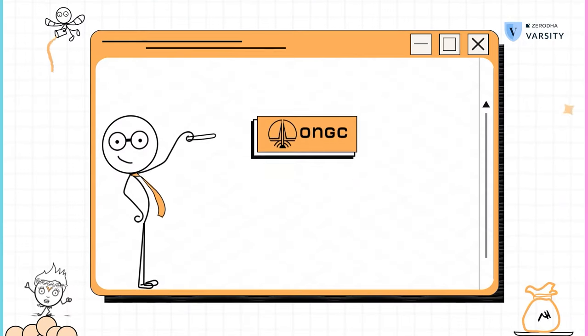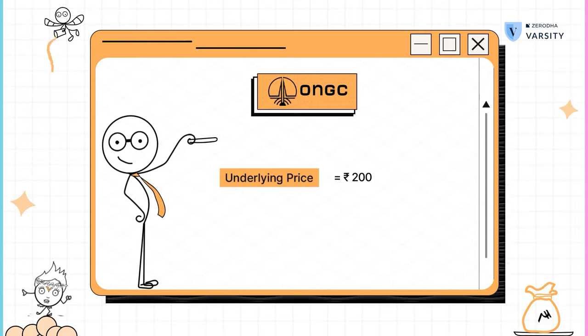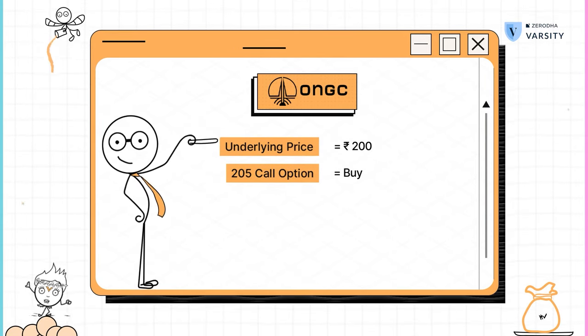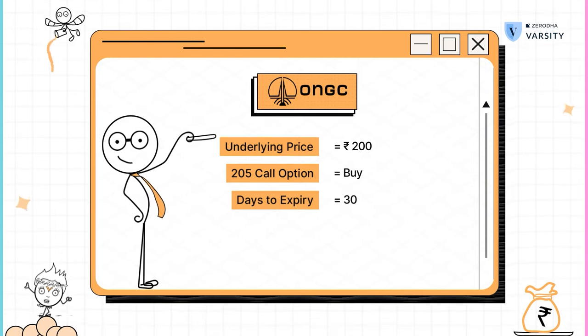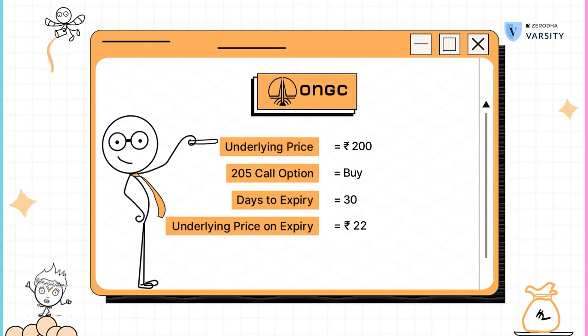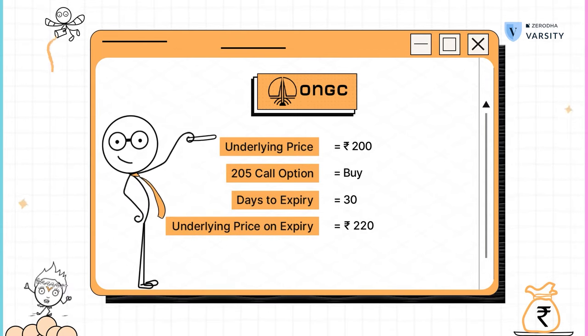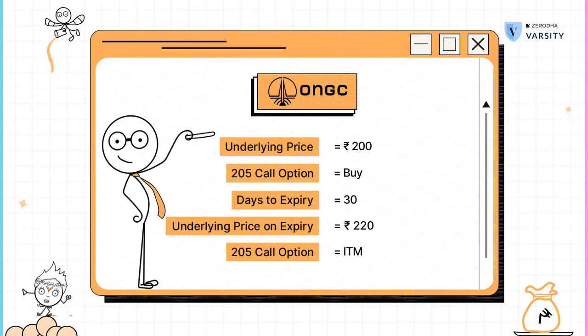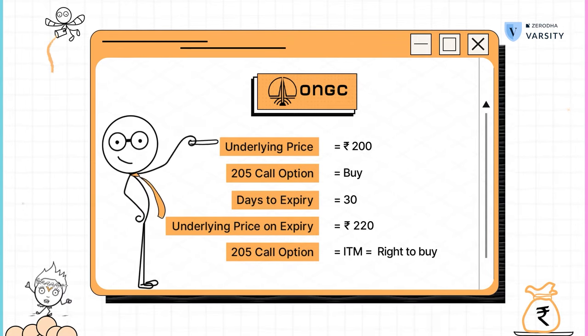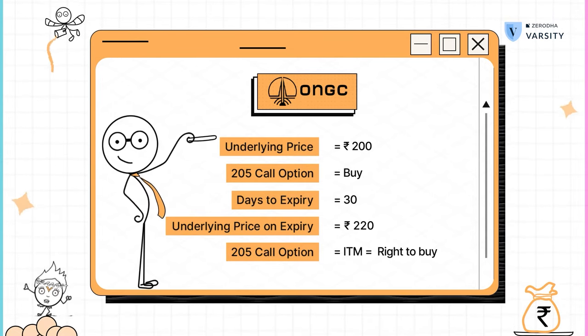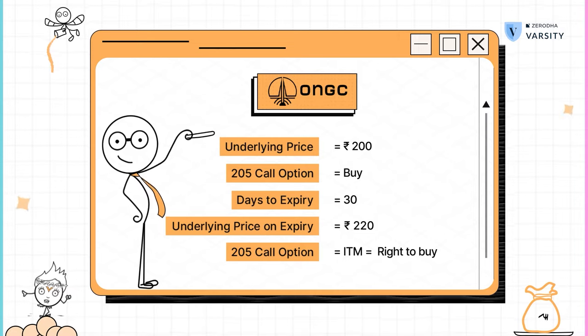Let me give you an example. ONGC as of today is trading at 200. I will go ahead and buy the 205 call option on ONGC. There are about 30 days to expiry. Let's assume on expiry, ONGC expires at 220. Now, the 205 call option that I have is in the money, which gives me the right to buy ONGC at 205 when ONGC is trading at 220 in the open market. In this case, the seller is obligated to sell me ONGC at 205 and I have the right to buy ONGC at 205.